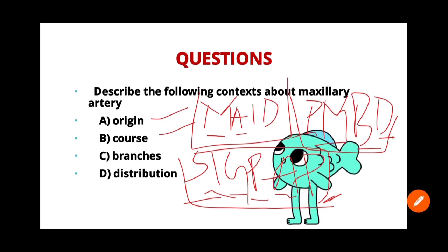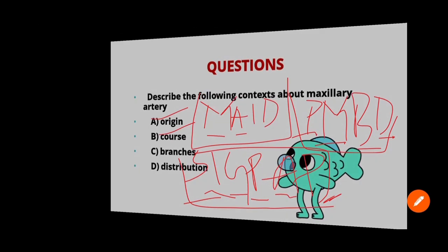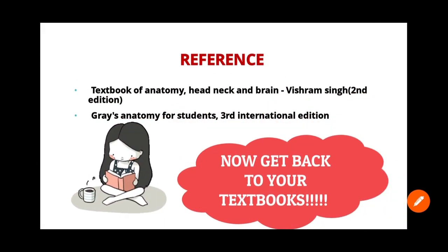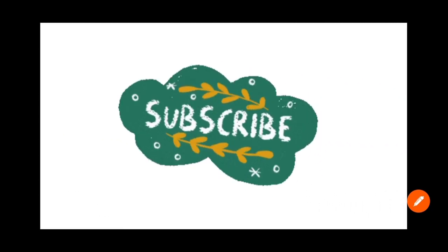References include the Textbook of Anatomy: Head, Neck and Brain by Vishram Singh, second edition, and Gray's Anatomy for Students, third international edition. You can also refer to BD Chaurasia. Get back to your textbooks, read along with this video, use the mnemonic, and try to draw your own pictures. If you found this video useful, please like, share, subscribe, and click the bell icon. Thank you.